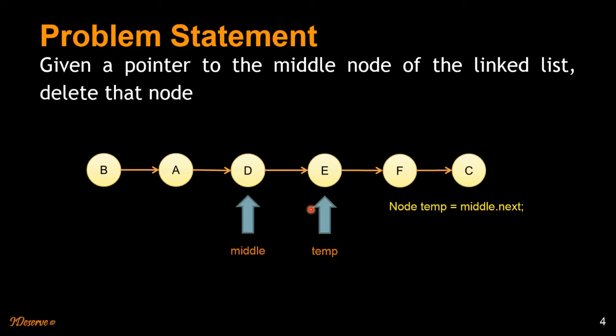So what we do is first we store node E in a temp variable, which is temp equals middle.next. We can go ahead from middle and then we copy the data from E to D and duplicate node E here at D.